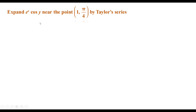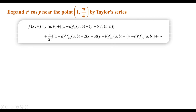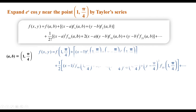Example 1: Expand the function f(x, y) = e^x · cos(y) near the point (1, π/4) using the Taylor series. We know the Taylor series expansion about the point (a, b) = (1, π/4). The first step is to substitute a = 1 and b = π/4 into the formula.